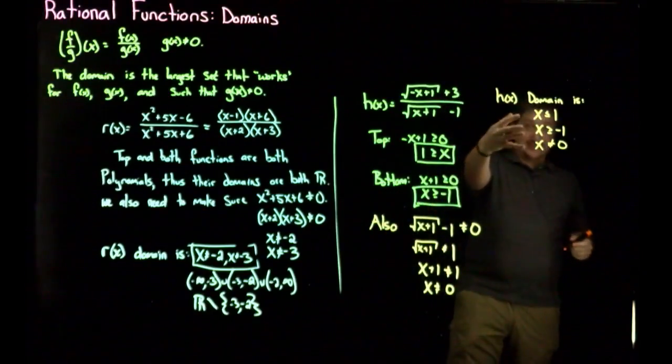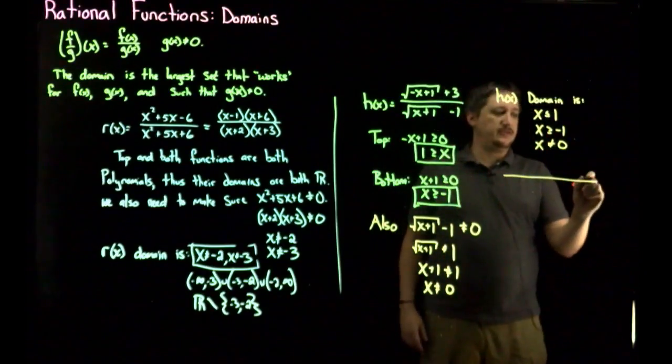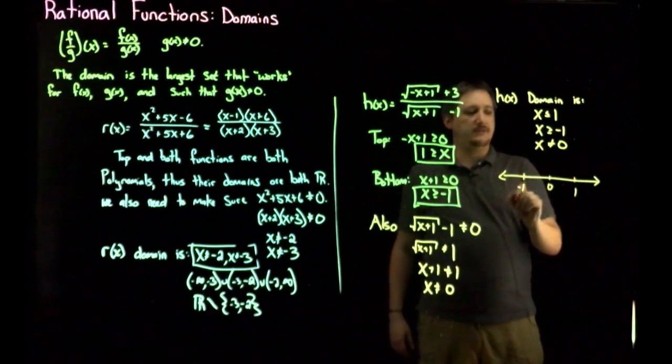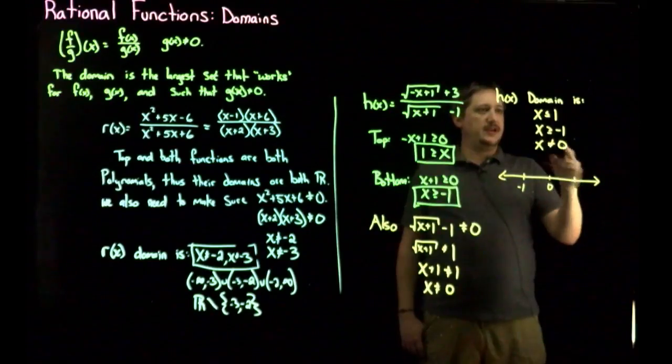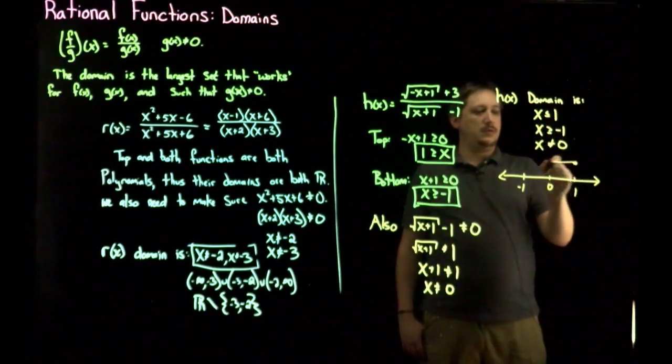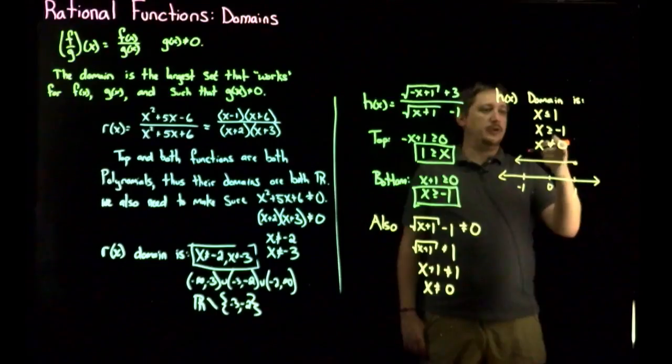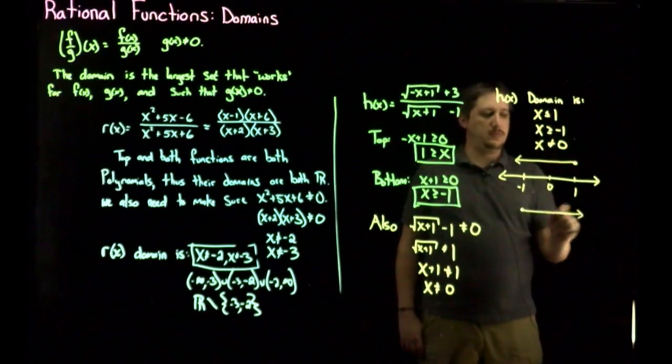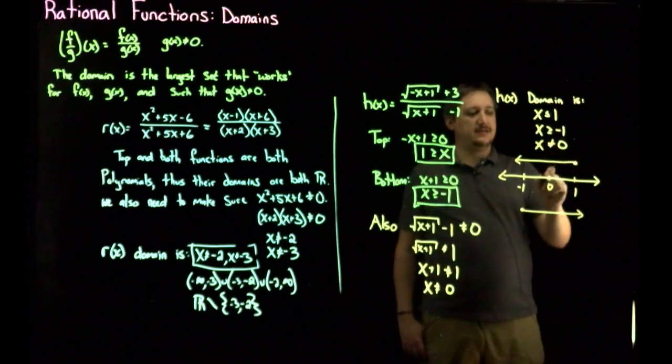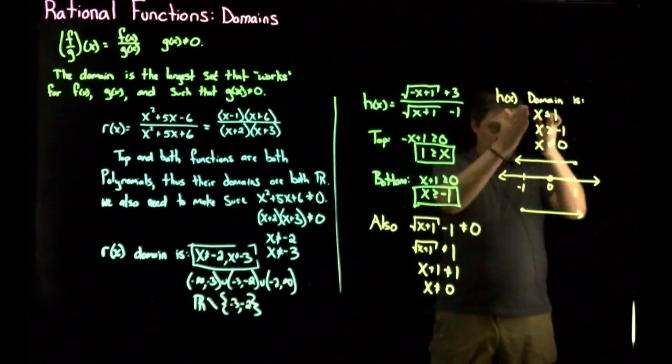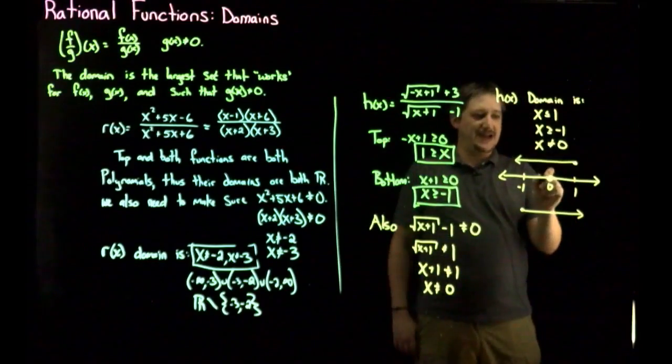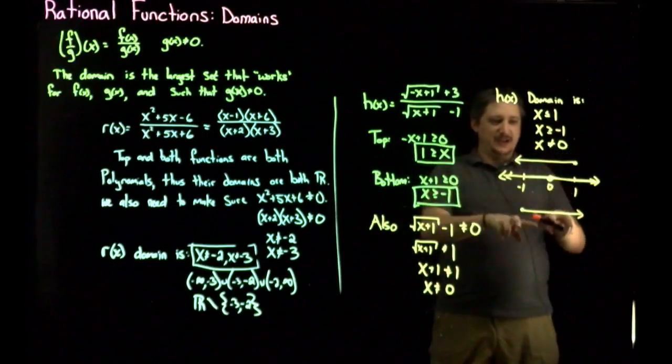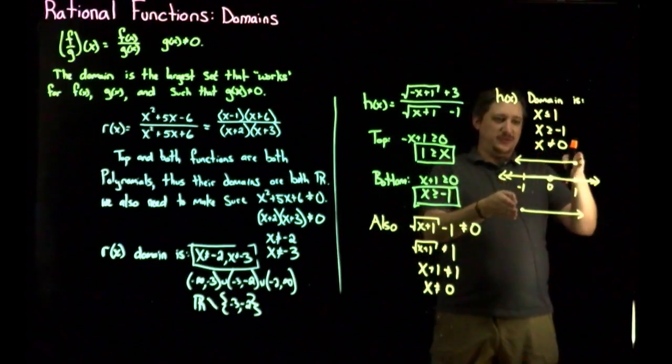So if you're not sure what this is, just by looking at it, you can always graph these things. So I have 0, 1, negative 1. So I want it to be less than or equal to 1. I want it to be greater than or equal to negative 1. And I need that it is not zero. And then I look at where they overlap. So not zero means it can be anything else. So it overlaps everywhere except zero between negative 1 and 1.